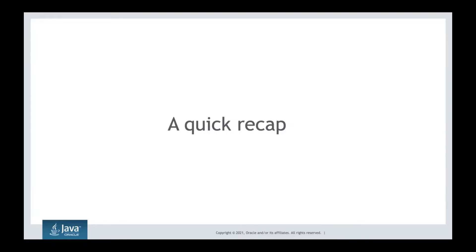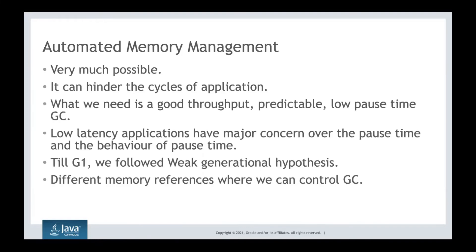We start with a quick recap of garbage collectors. Garbage collection is automated memory management — it is a good deal because you can focus on your main application rather than managing memory leaks. However, you need to understand it can hinder the cycle of the application. The GC itself will take some time, and it is possible it can pause your application or reduce its performance.